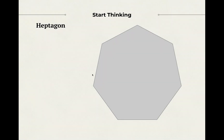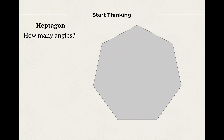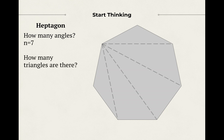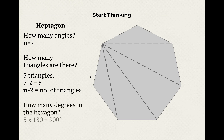What about a heptagon? Hepta means seven, so seven sides and seven angles. Go ahead and pause the video and see if you can figure out how many degrees are inside a heptagon. Hopefully you figured it out. N equals seven, so n minus two equals five — there are five triangles inside a convex heptagon. Five times 180 equals 900 degrees. So the sum of the measures of the interior angles of a heptagon is 900 degrees.